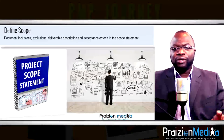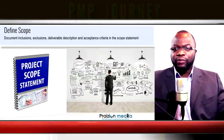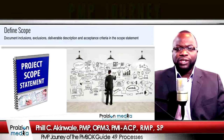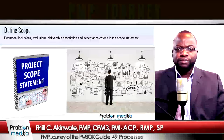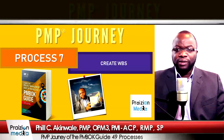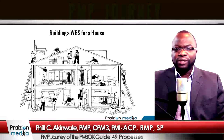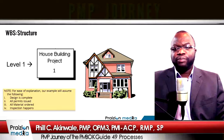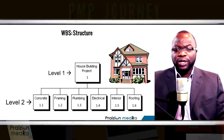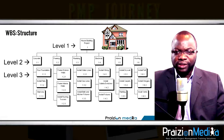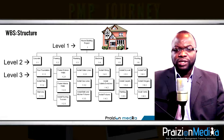In define scope, we want to define inclusions, exclusions, deliverable descriptions, and acceptance criteria, and put all of this into a document called the project scope statement. Process 7: Create WBS. The WBS looks like a family tree but shows how the project scope is decomposed into lower levels of detail. Google the term WBS to get a better idea of this.